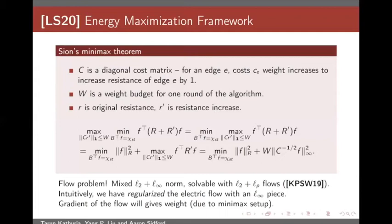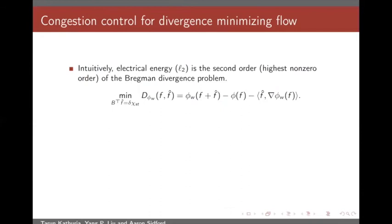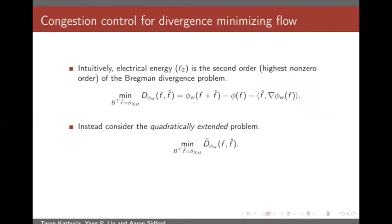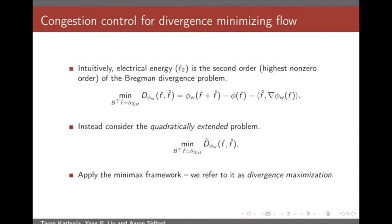So how do we do this for a divergence minimizing flow? It turns out it's actually exactly the same, more or less. The electric energy is the second-order approximation of the Bregman divergence because the Bregman divergence subtracts out the first-order gradient term. Because this is like a quadratic problem, it makes sense to smooth it quadratically outside a region — we do this to maintain that the Hessian is stable throughout the whole problem. We'll take this smooth divergence problem and apply the minimax framework to it. Intuitively it works just as well because this divergence problem, being smoothed and locally quadratic around the origin, looks very much like an electric flow.